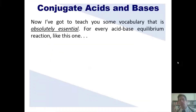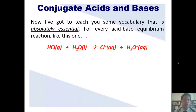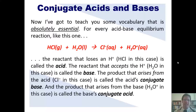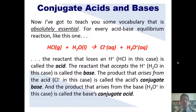I have to teach you some vocabulary that is absolutely essential. For every single acid-base equilibrium reaction, the reactant that loses an H+, in this case HCl, is called the acid. The reactant that accepts the H+, which is H2O, is called the base. The product that arises from the acid, which would be chloride, is called the acid's conjugate base. The product that arises from the base, which is H3O+ or hydronium, is called the base's conjugate acid.